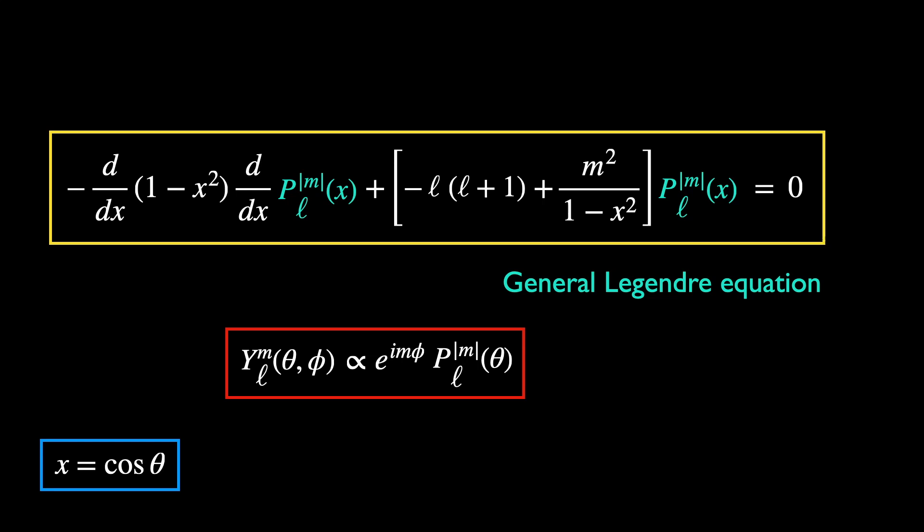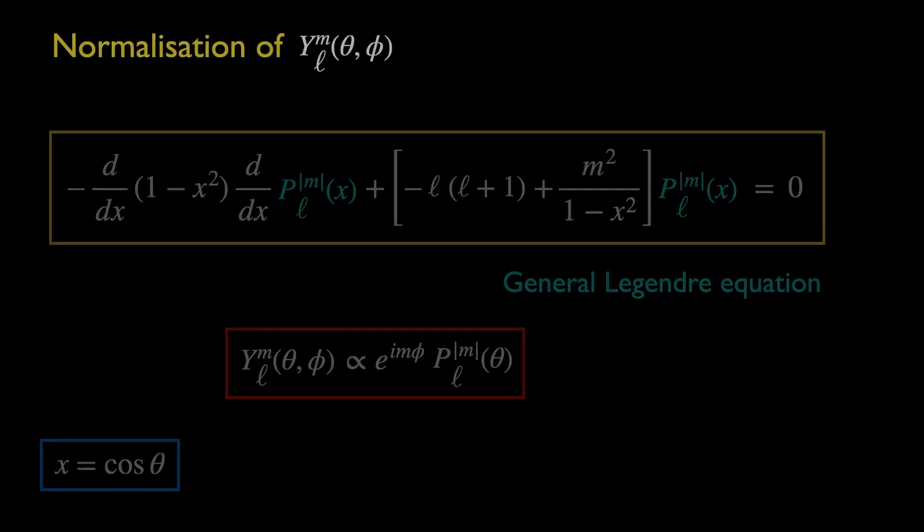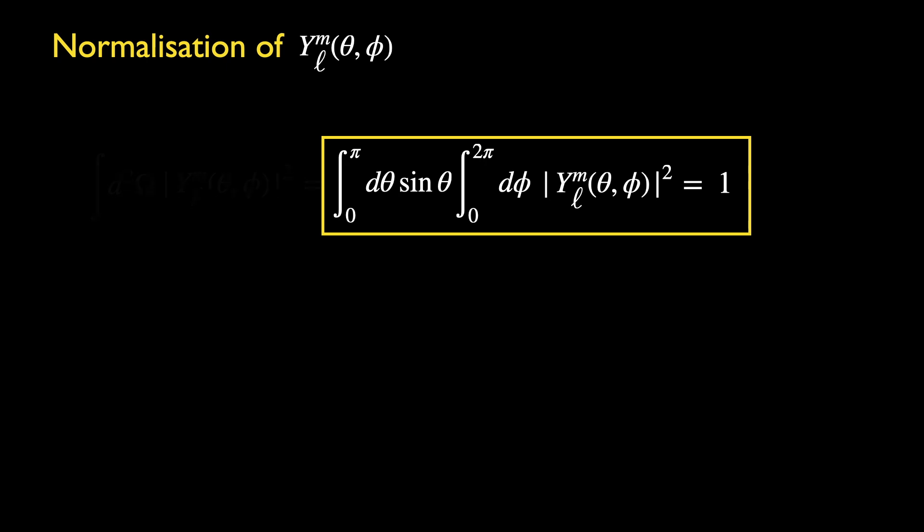For now, let's just use this equation to evaluate the normalization of the spherical harmonics. A suitable normalization condition would be requiring that the integral of the absolute square of Y over the entire solid angle to be equal to 1. This condition can always be satisfied by an appropriate choice of the overall constant function of Y, which is not fixed by the Laplace equation.